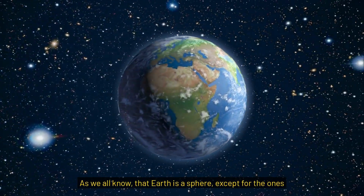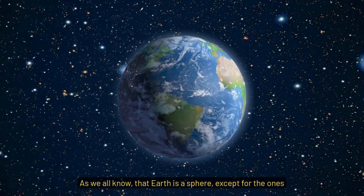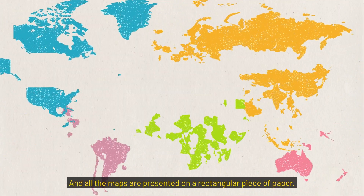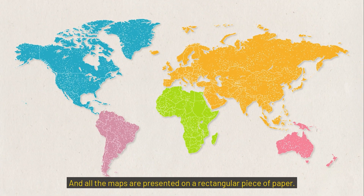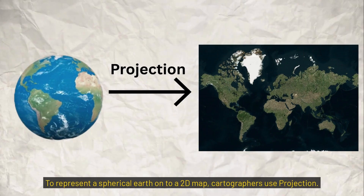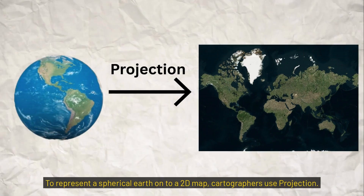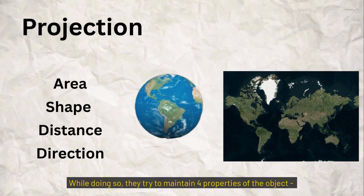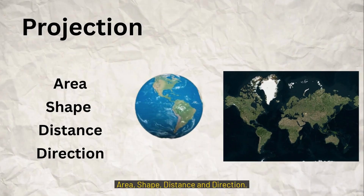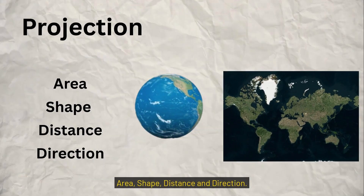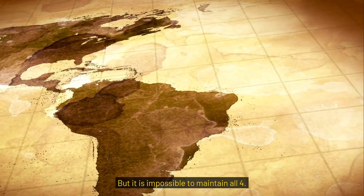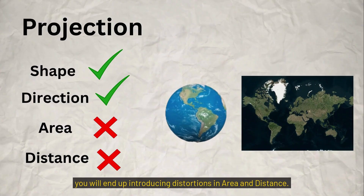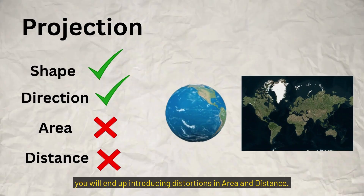As we all know, Earth is a sphere — except for the ones who believe the Earth is flat — and all maps are represented on a rectangular piece of paper. To represent a spherical Earth onto a 2D map, cartographers use projection. While doing so, they try to maintain four properties: area, shape, distance, and direction. But it is impossible to maintain all four. For example, if you try to maintain shape and direction, you will end up introducing distortions in area and distance.